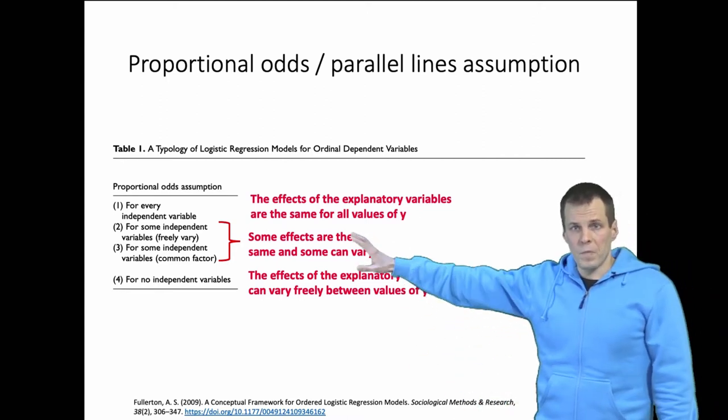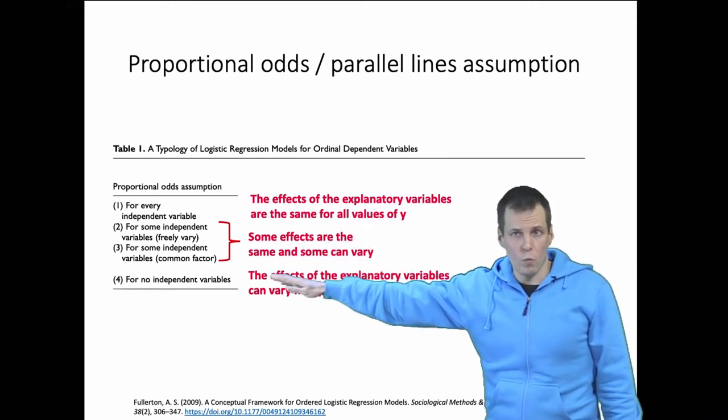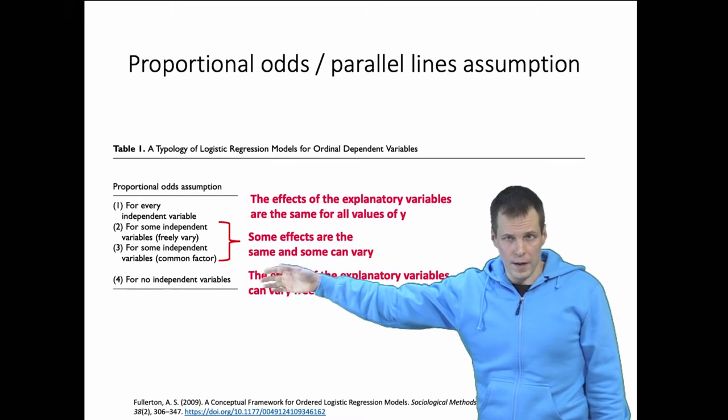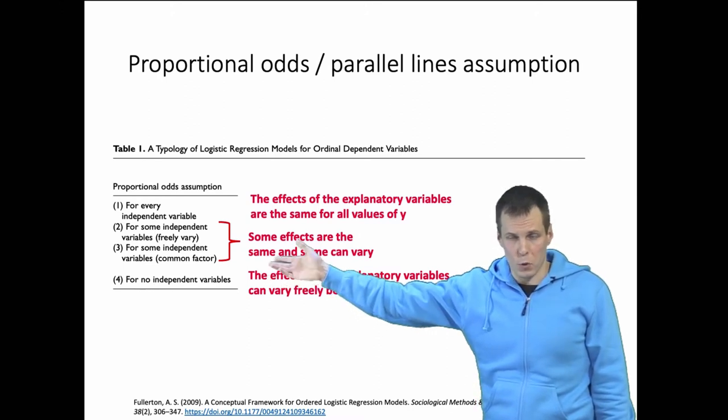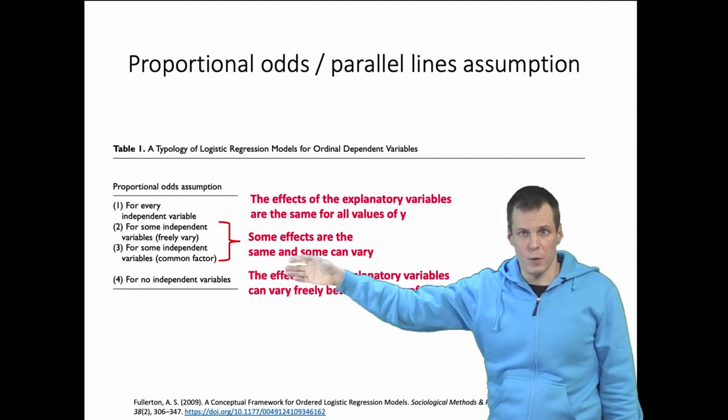These two come in different variants. The common factor means that we constrain the effects of some variables to be proportional to each other, but we allow the strength of those variables to differ between the different categories.